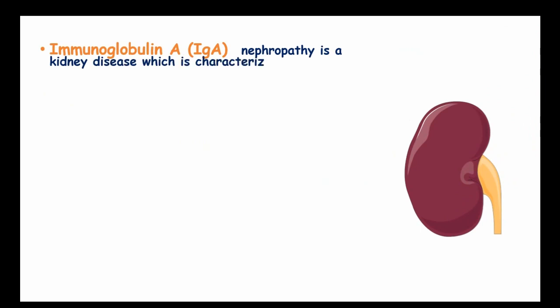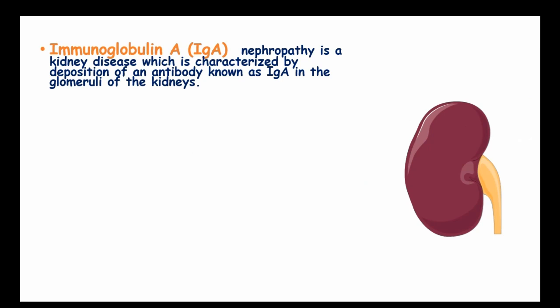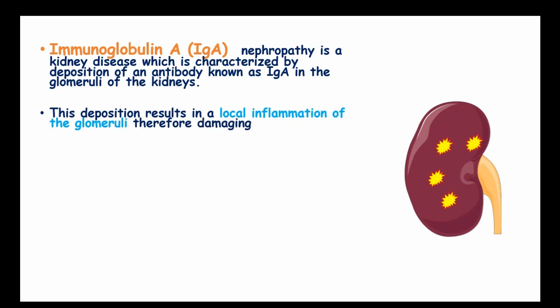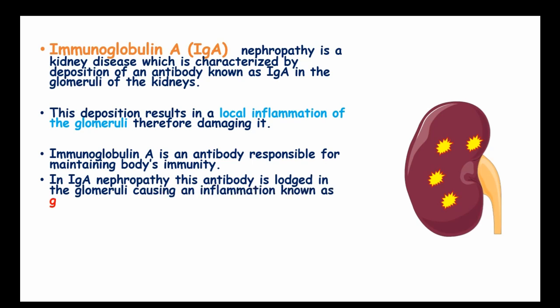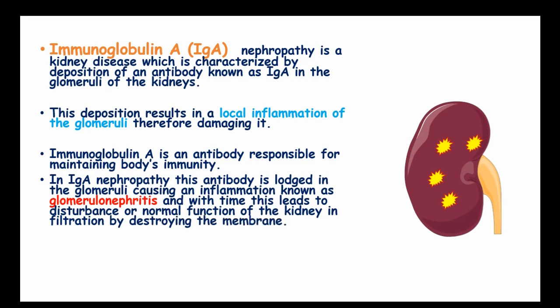Immunoglobulin A nephropathy is a kidney disease characterized by deposition of an antibody known as immunoglobulin A in the glomeruli of the kidneys. This deposition results in a local inflammation of the glomeruli, therefore damaging the basement membrane. Immunoglobulin A is an antibody responsible for maintaining the body's immunity, and in IgA nephropathy this antibody is lodged in the glomeruli causing inflammation known as glomerulonephritis, which leads to disturbance of the normal functioning of the kidney in filtration by destroying the membrane.